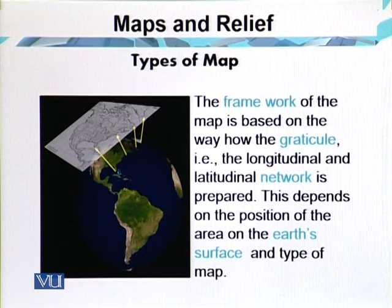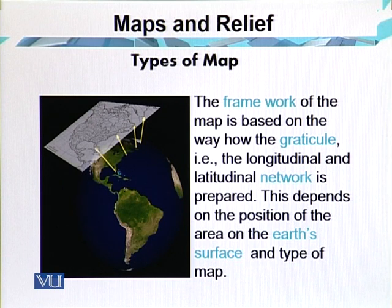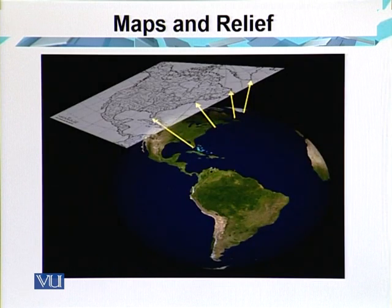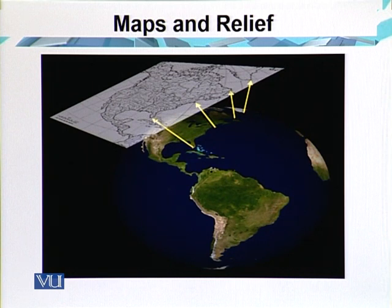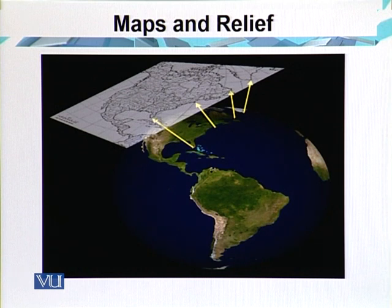The framework of the map is based on how the graticules — the longitudinal and latitudinal network — are prepared. This depends on the position of the area on the earth's surface and the type of map. Each and every point on the map corresponds to an actual terrestrial or celestial position. By gradual evolution in the science of map making, it is now possible to picture the earth's surface more precisely and compress varied information into a single map sheet.